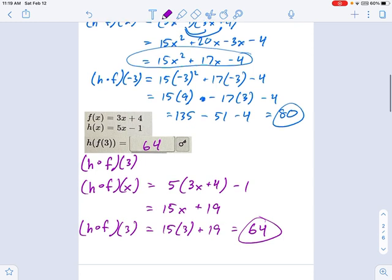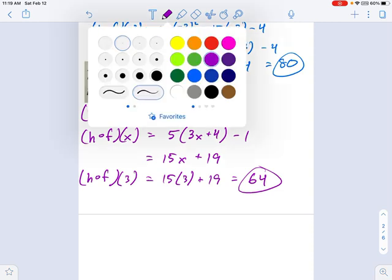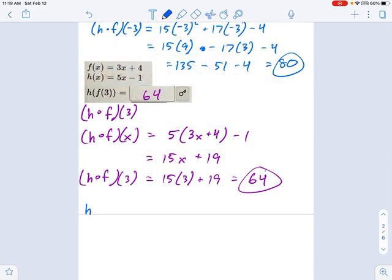Now the other way of doing this would have been to say, first, let's calculate, so I'm going to switch colors here, new way, h of f of 3, and just go by order of parentheses.